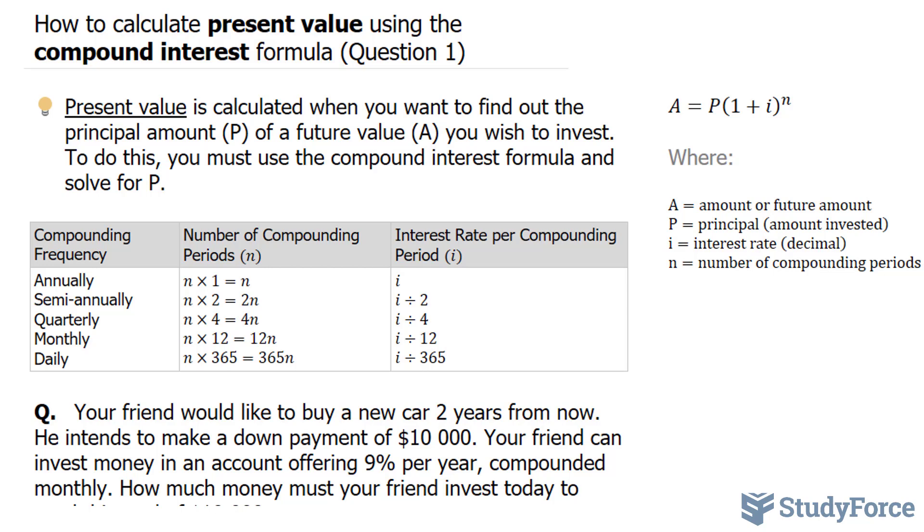Let's start off with a quick definition. Present value is calculated when you want to find out the principal amount, P, of a future value, A, you wish to invest. To do this, you must use the Compound Interest Formula and solve for P.